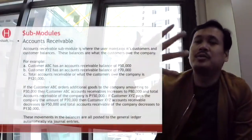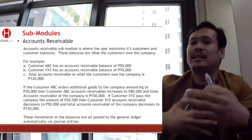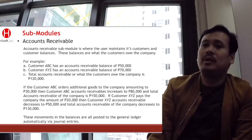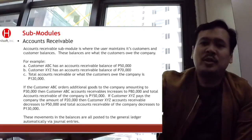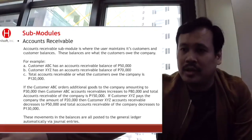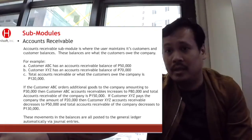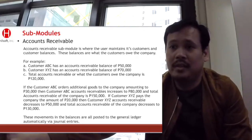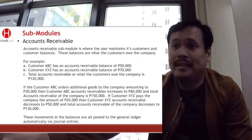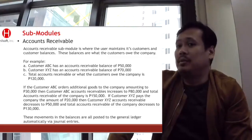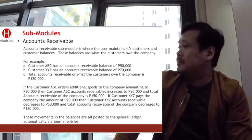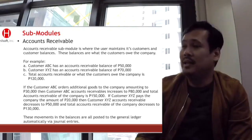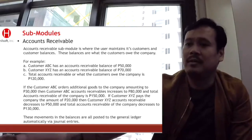The same applies to accounts receivable — it's just the reverse. If the customer orders additional goods from the company amounting to 30,000, then 50 plus 30 — 80,000 is now the customer's outstanding balance. When you collect, the receivable decreases.